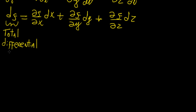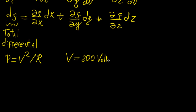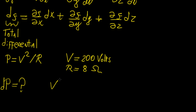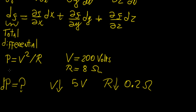Let's say we have a resistor, and the power in the resistor is modeled as voltage squared over R. Let's say we're supplying a voltage of 200 volts and we have a resistance of 8 ohms, and we want to find by how much the power is going to change — so let's call that change dp. How much is it going to change if we decrease V by 5 volts and we decrease the resistance by 0.2 ohms?